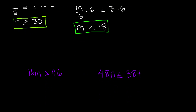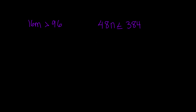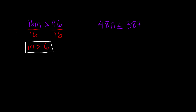Now let's go down to some multiplication examples. Here we have 16m is greater than 96, and 48n is less than or equal to 384. So here 16 is being multiplied by m, so we have to divide by 16 on both sides. 16 and 16 will cancel each other out, and we are left with m is greater than 96 divided by 16, which is 6. That means that the value of m is any number greater than 6, so it could be 1,859.